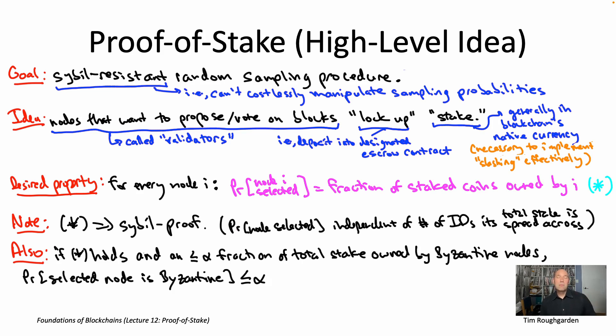So throughout this lecture, when we're talking about proof of stake consensus protocols, we'll talk about both BFT style protocols. So there you should expect an assumption that less than a third of the stake is controlled by Byzantine nodes. We'll also discuss longest chain protocols. There you should expect the assumption to be that less than half of the stake is controlled by Byzantine nodes.